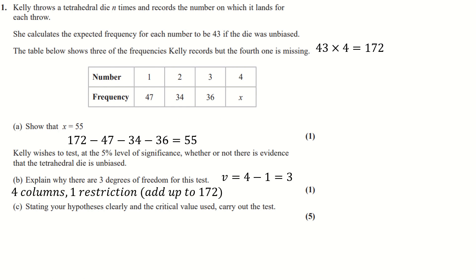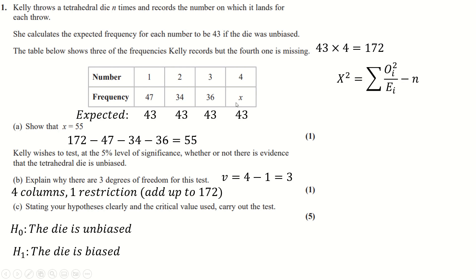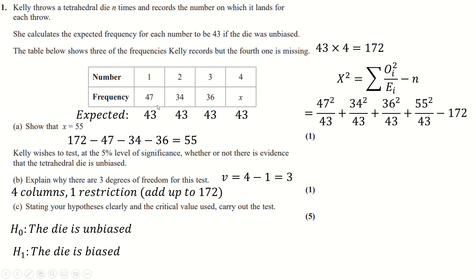Our hypothesis: H0 is that the die is unbiased, H1 is that it is biased. We can then set up the expected column and work out our chi-squared statistic. It's (O−E)² over E for each category, summed up. None of the expected values are below 5, so we don't need to collapse any columns.